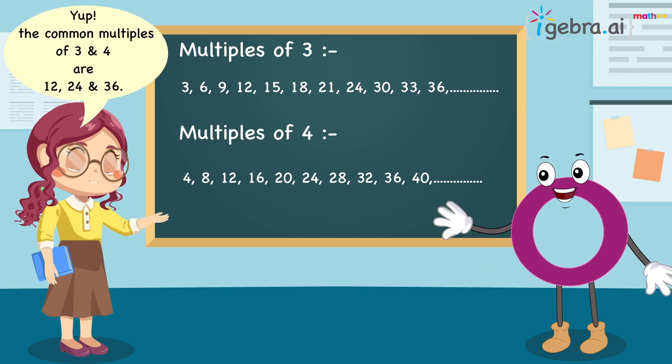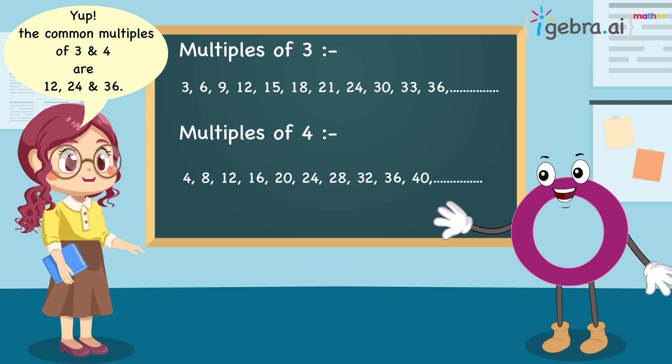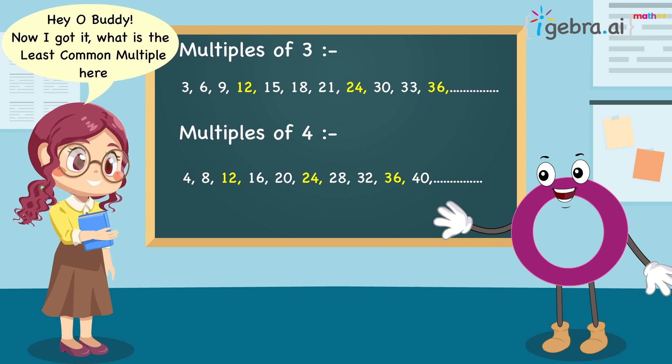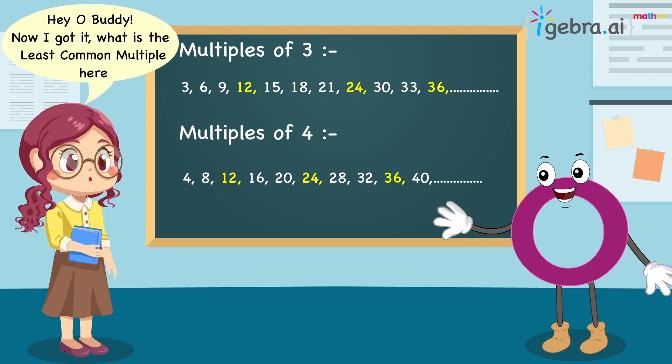Yep. The common multiples of 3 and 4 are 12, 24, and 36. Hey, Obadi. Now I got it. What is the least common multiple here?